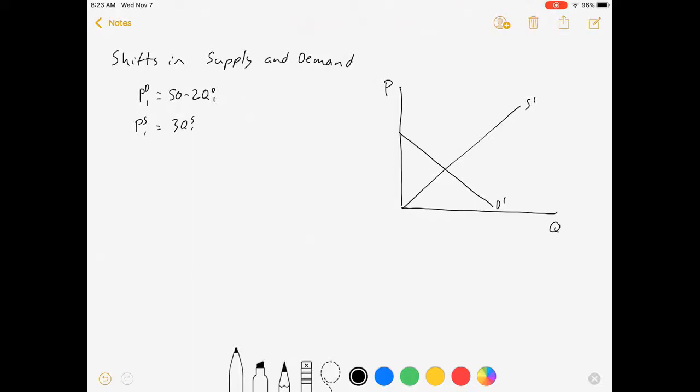Hello everybody, welcome to my video about supply and demand shifts. We're going to be looking at a competitive market that starts with this inverse demand curve, P equals 50 minus 2Q, and this inverse supply curve, P equals 3Q.